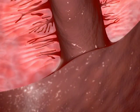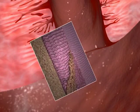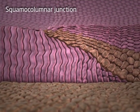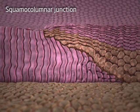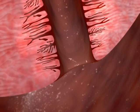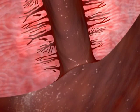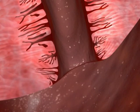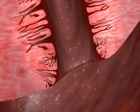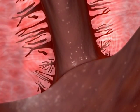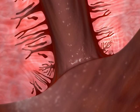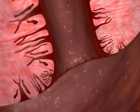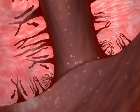The point where these two tissue types meet is called the squamous columnar junction. At puberty and during the early reproductive years, the cervix changes shape such that the lower endocervical canal everts into the vagina, where, over time, the surface is gradually replaced by squamous epithelium as a result of metaplasia.